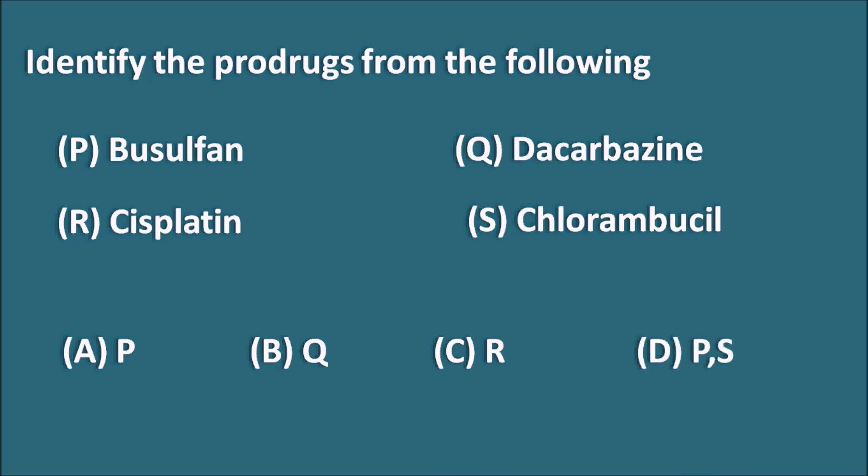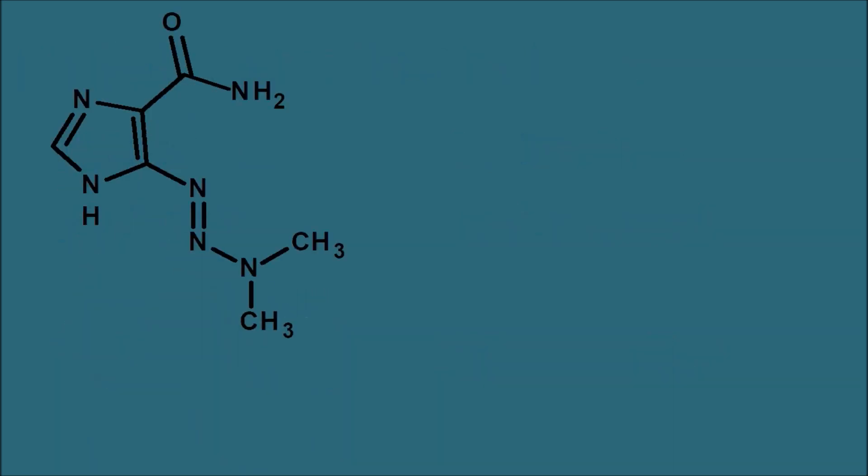The right answer is Q — dacarbazine. This is the structure of dacarbazine. Dacarbazine is chemically an imidazole carboxamide, where we can observe an imidazole ring attached to a carboxamide, which is further attached to a dimethyltriazeno group — that is why it is called DTIC (dimethyltriazeno imidazole carboxamide).